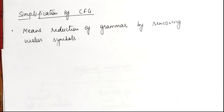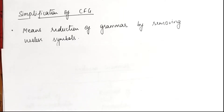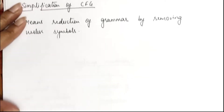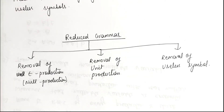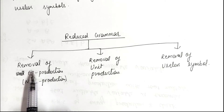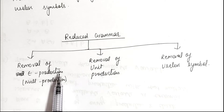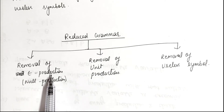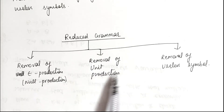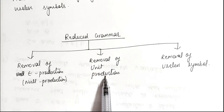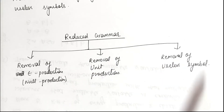Simplification of context free grammar means reduction of grammar by removing some useless symbols. To reduce a context free grammar into a reduced grammar, it can be categorized into three parts: first, removal of null production or epsilon production; second, removal of unit production; and third, removal of useless symbols.